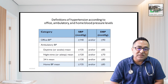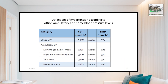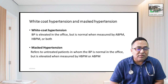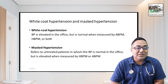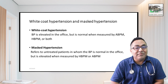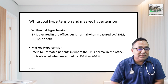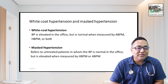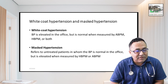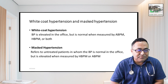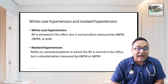Whenever there is discrepancy or doubt about whether a patient has hypertension, order an ambulatory blood pressure measurement. White coat hypertension is when BP is high in the OPD but normal at home. Masked hypertension is when BP is normal in the OPD but high on home or ambulatory blood pressure measurement.